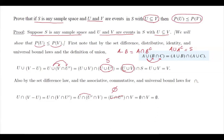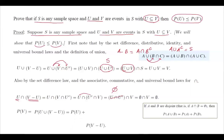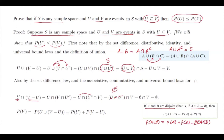Our observation is that these two sets, U and V minus U, are disjoint. Since they are disjoint and V equals U union (V minus U), the probability of V equals probability of U plus probability of V minus U. This comes from the rule that for two disjoint sets, the probability of their union equals the sum of their probabilities. In general, P(A union B) = P(A) + P(B) minus P(A intersection B), but since the intersection is empty, that term equals zero.